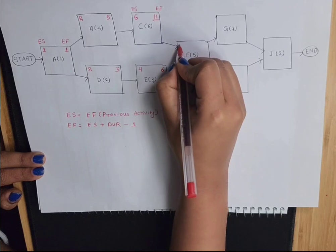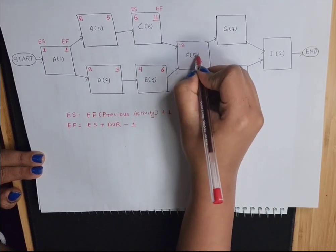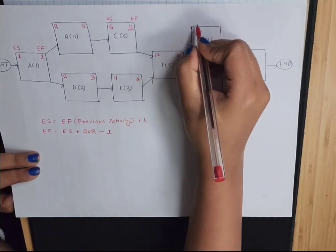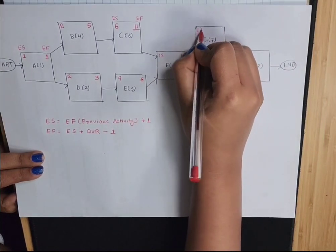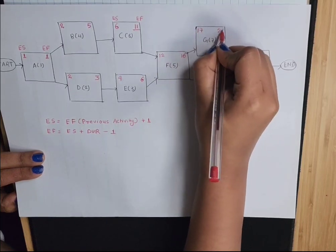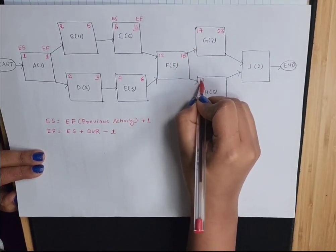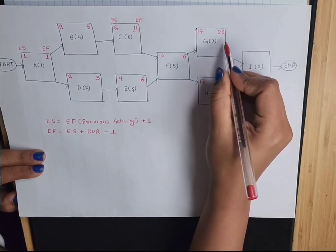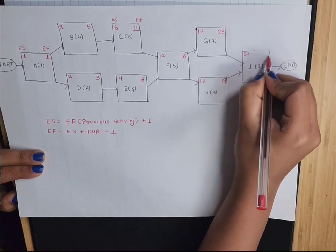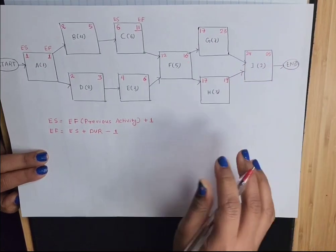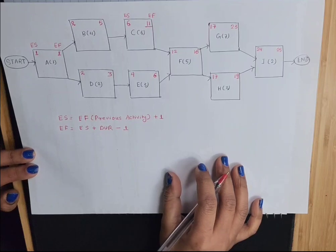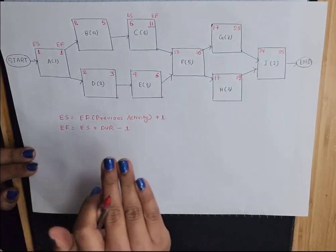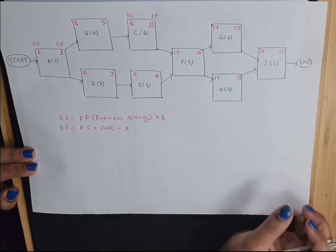So F is going to start on day 12. Then 12 plus 5 is 17, minus 1 is 16. For G: early start 17, early finish 23. For activity I, we take 23, so early start 24 and early finish 25. This is how we calculate the early start and early finish for any given project network diagram.